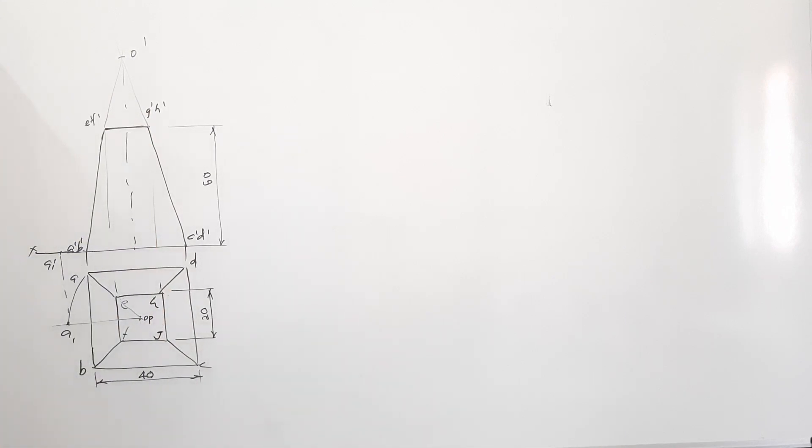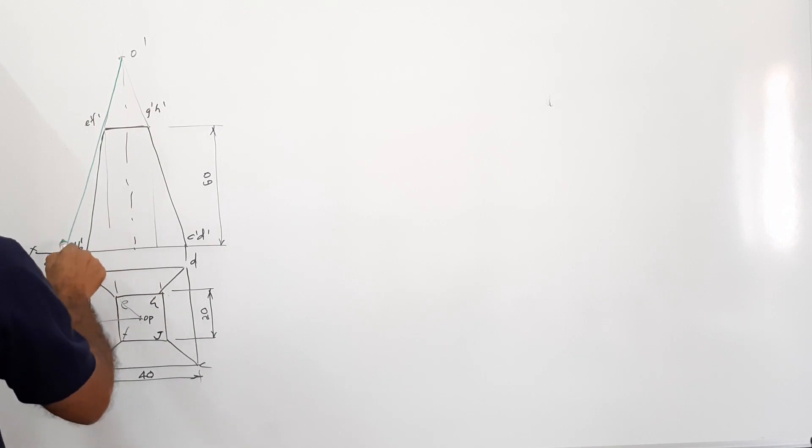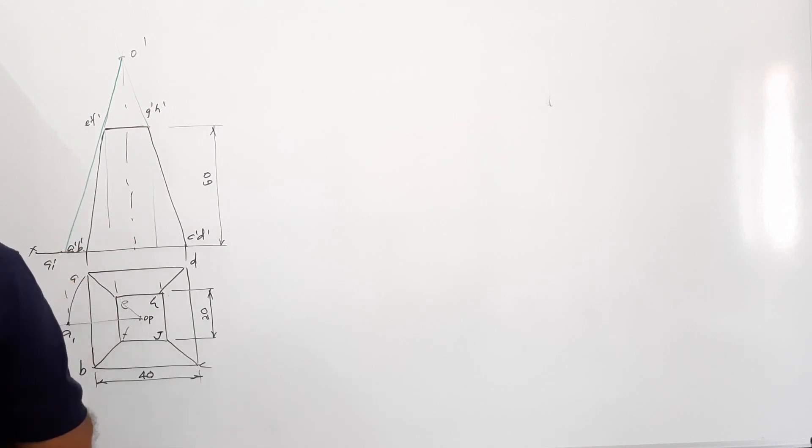O dash is the apex. Now what? You have to connect O dash to A1 dash. What is it?